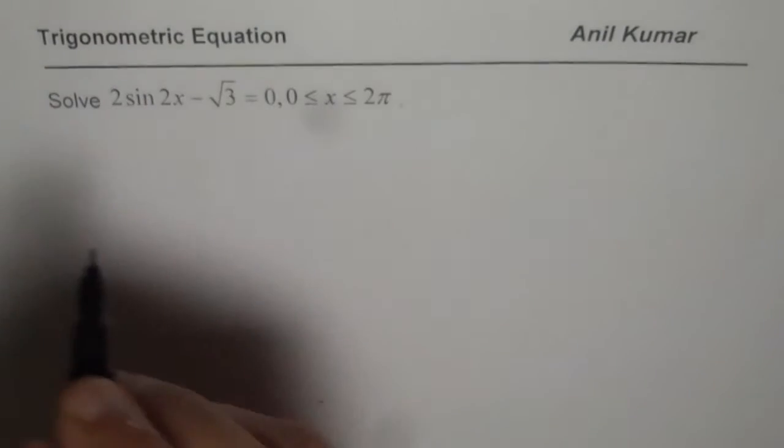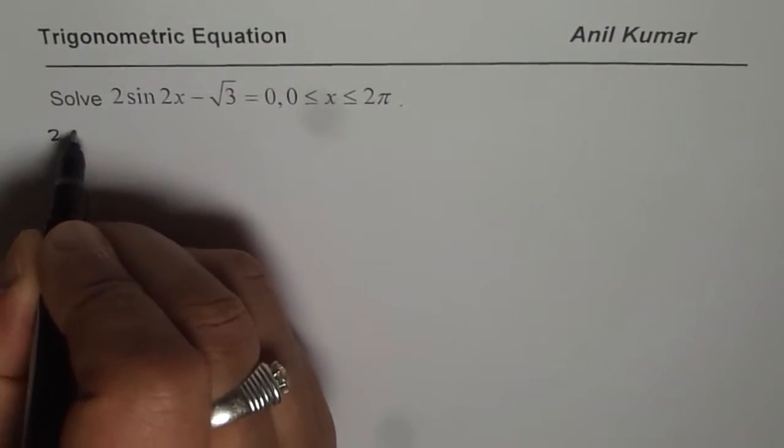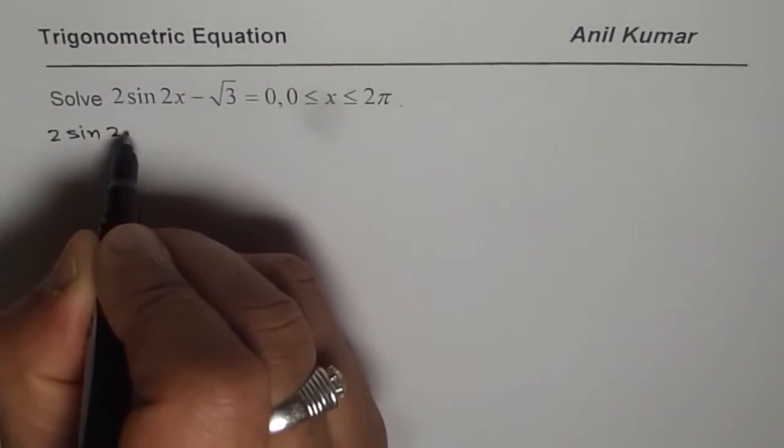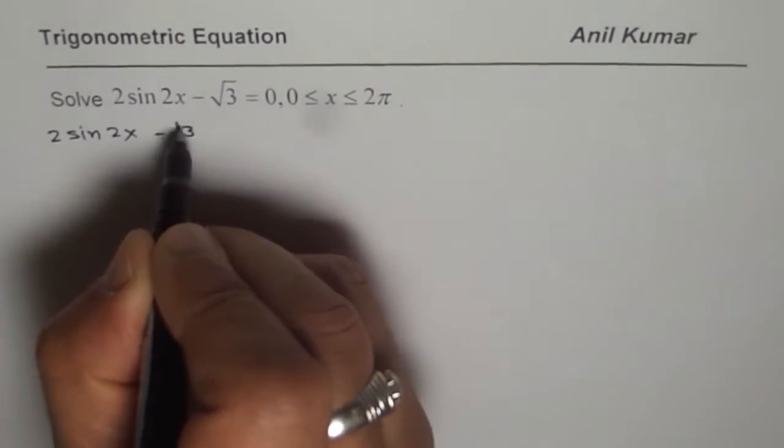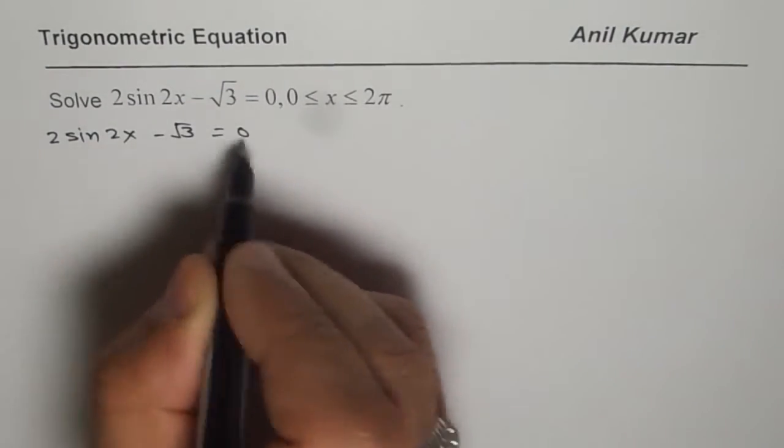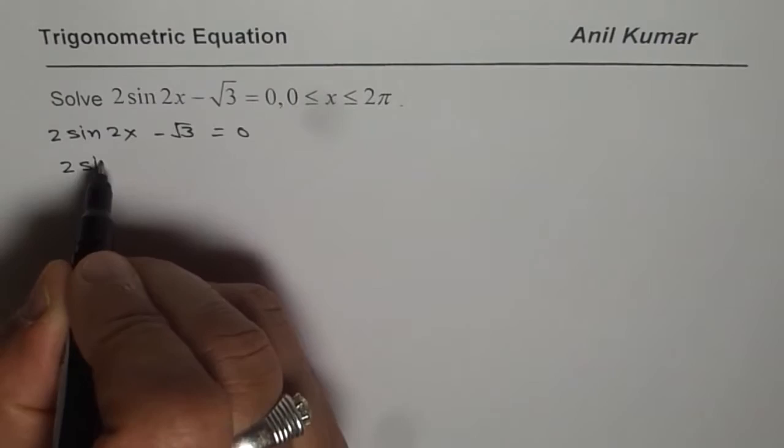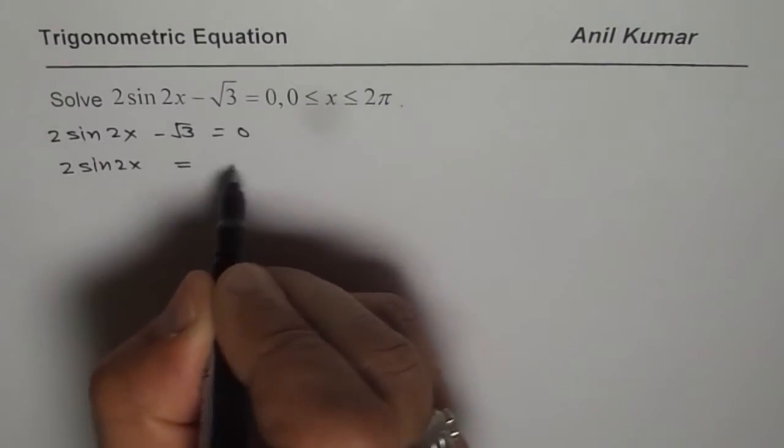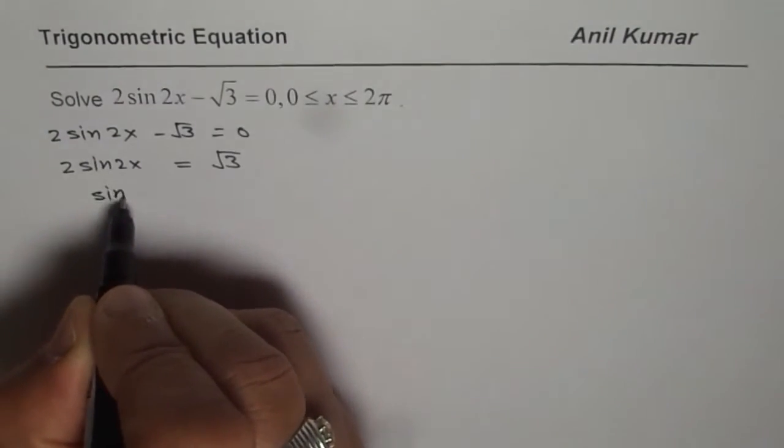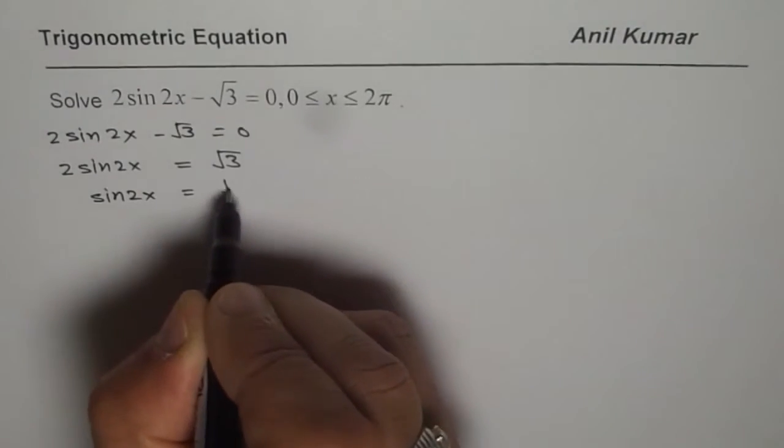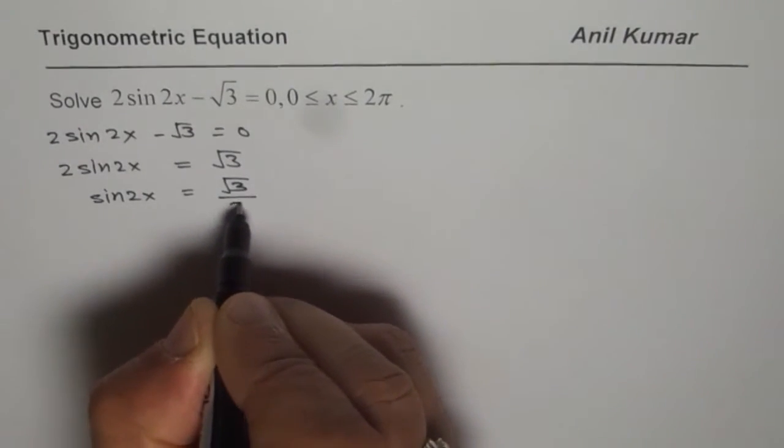We can bring the terms together. Take square root 3 to the right side, so we get 2 sin 2x equals square root 3, and sin 2x equals square root 3 divided by 2.